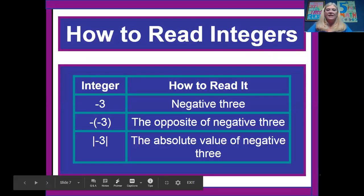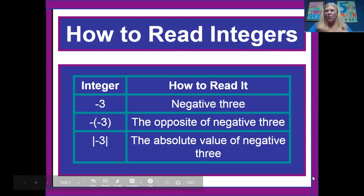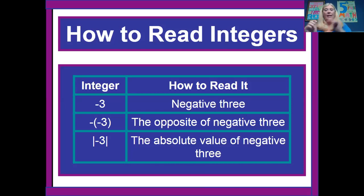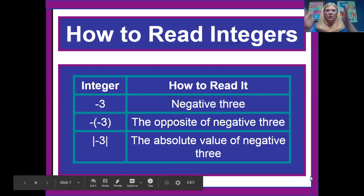When we see these negatives written this way, this is how we say it. We say negative three. And when there's a negative outside the parentheses with a negative inside, it means the opposite of negative three. Can you figure out what that is? You're right. The opposite of negative three is three. And then absolute value of negative three. Because those straight bar lines are on both sides.